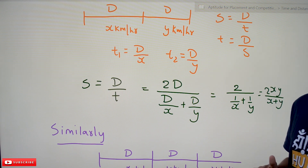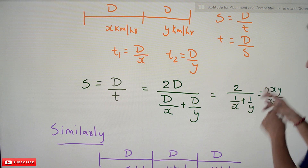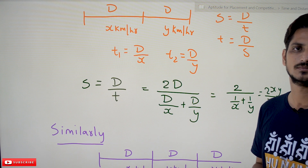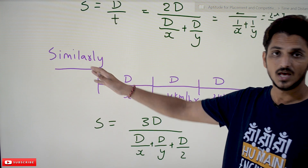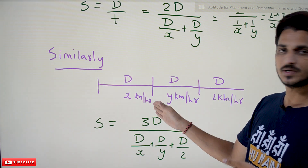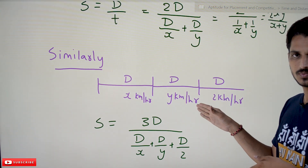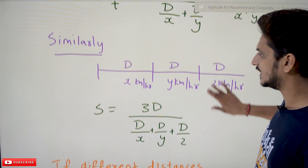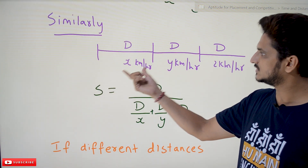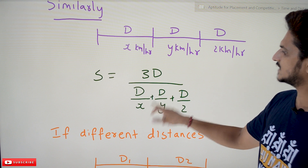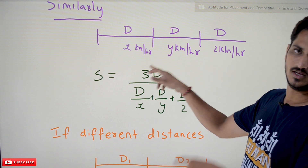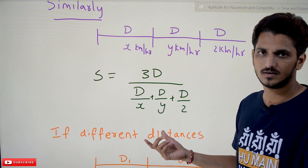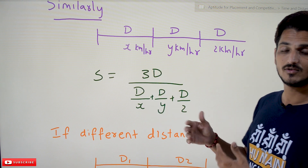We can expand the same concept to multiple distances. They won't ask such simple questions; the exam questions will be more involved. Similarly, if he traveled distance d at x km/h, the same distance at y km/h, and the same distance at z km/h, the total time is d/x plus d/y plus d/z, and total distance is 3d. Dividing gives the average speed for three equal distances at different speeds.